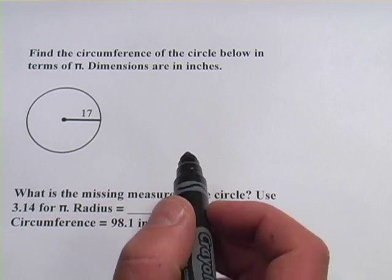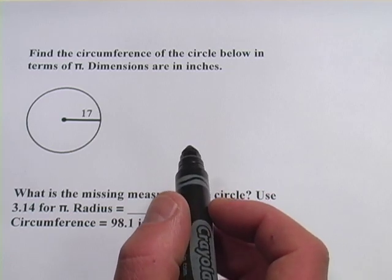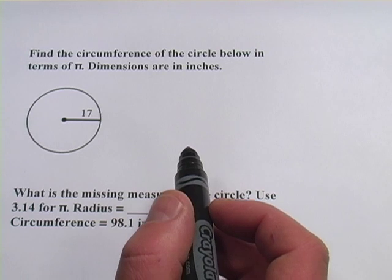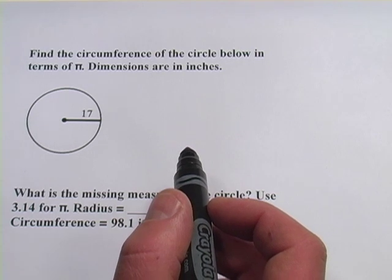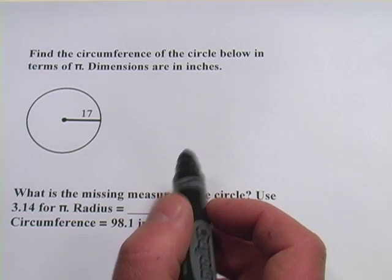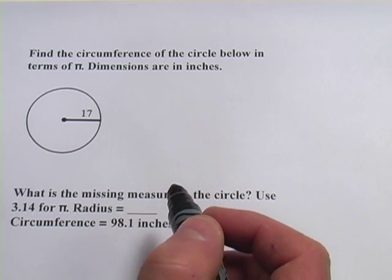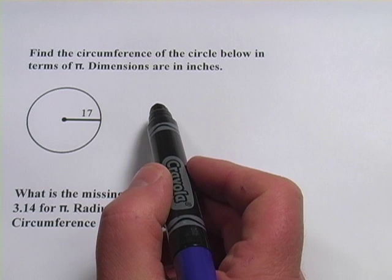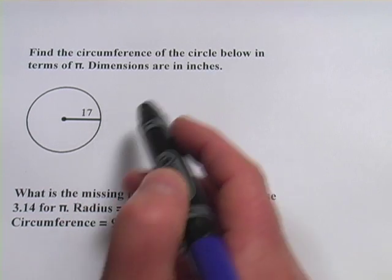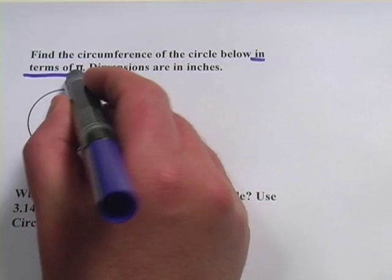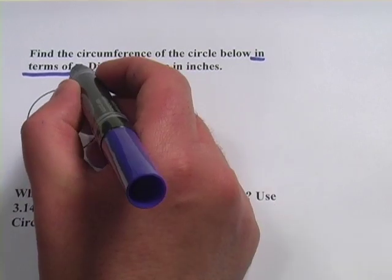In these problems, we're doing some pretty tricky things with the formula for circumference. And instead of finding the circumference, in these problems we might be either given the circumference and have to find the radius, or we might be asked to do what this first problem asks, which is to find the circumference but in terms of pi. So let me explain that.